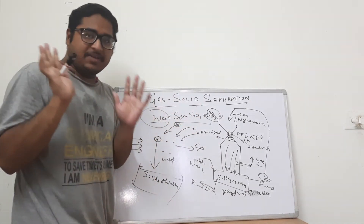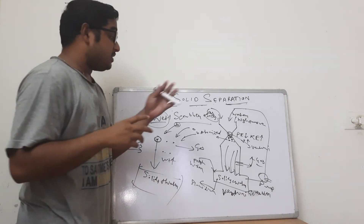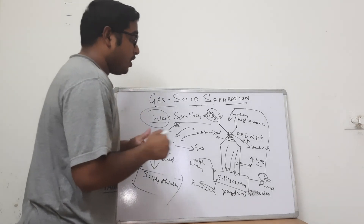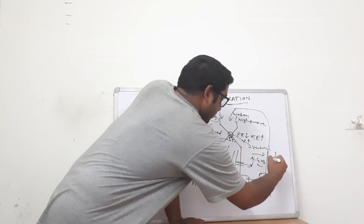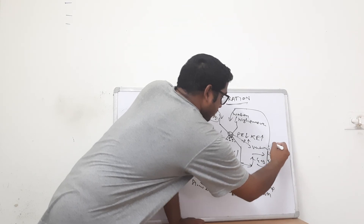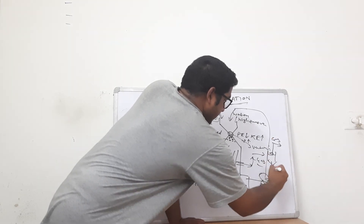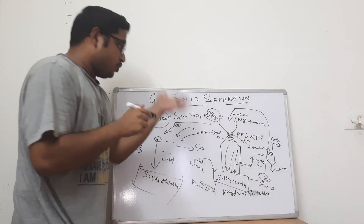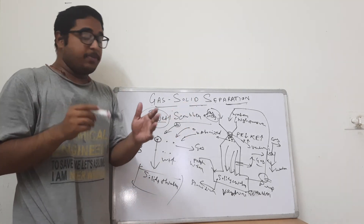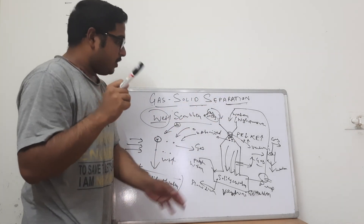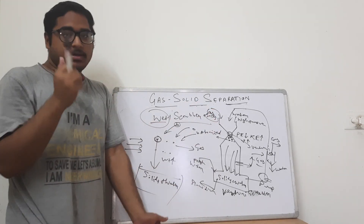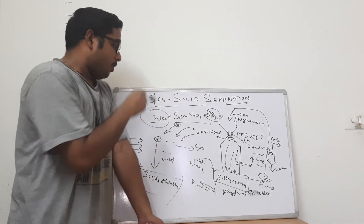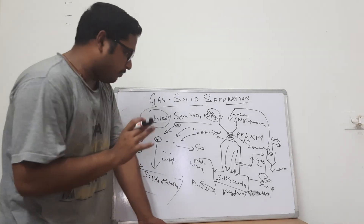You have removed the solids effectively, but there might be a carryover of liquid droplets along with the gas. That is why the venturi scrubber is generally followed by a cyclone separator, which rotates the flow in a circulatory motion, allows the gas to escape, and deposits the water droplets. So the venturi scrubber or wet scrubbing system is generally followed by a cyclone separator to ensure the gas is free of water droplets. First we remove the solids, then we remove any entrained water droplets in the cyclone separator.